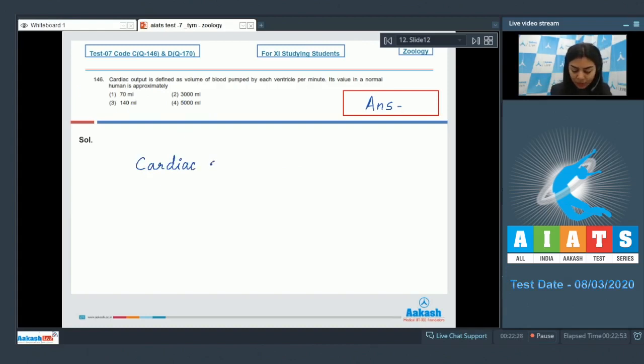To calculate cardiac output, we need to know how much blood is pumped out by each ventricle per minute. We multiply the stroke volume, that is the amount of blood pumped out by each ventricle, by heart rate, that is 72 beats per minute.